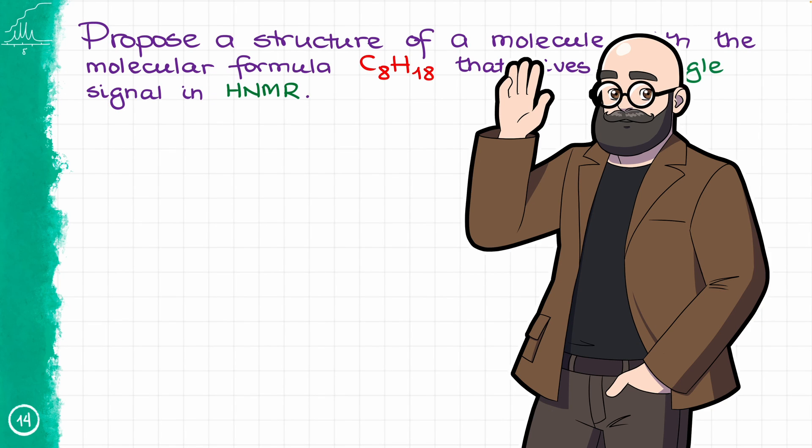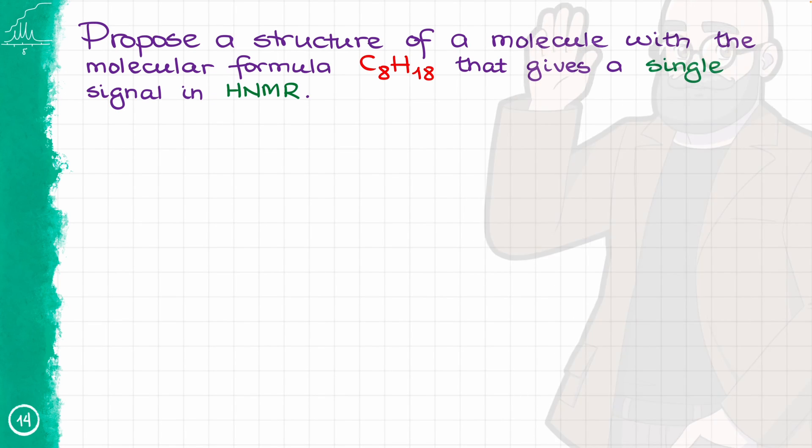Hello everyone, Victor is here, your guide to all things organic chemistry. Today I want to look at this fun-looking organic chemistry puzzle that is all about NMR. So here we have a molecule with the molecular formula C8H18, and we need to figure out what is the structure for this molecule, given that this molecule only gives us a single signal in HNMR. We don't have much data to work with, but let's see what we can do about that.